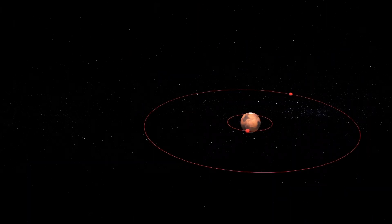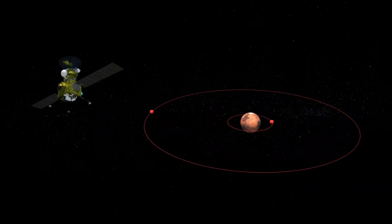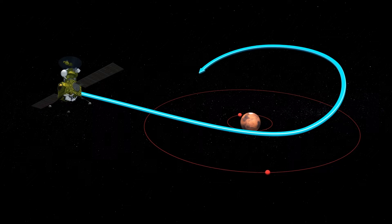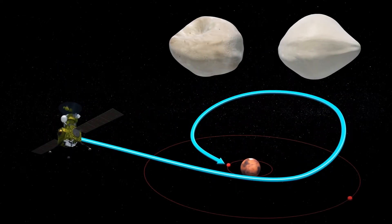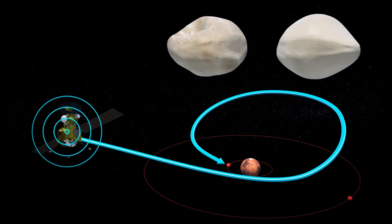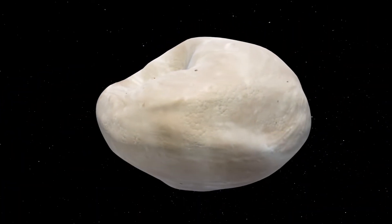According to JAXA, the Martian Moon Exploration Spacecraft, or MMX, will enter into stable orbit to observe the two moons for a year. The MMX will utilize a NASA-funded neutron and gamma-ray spectrometer to determine the composition of these moons.